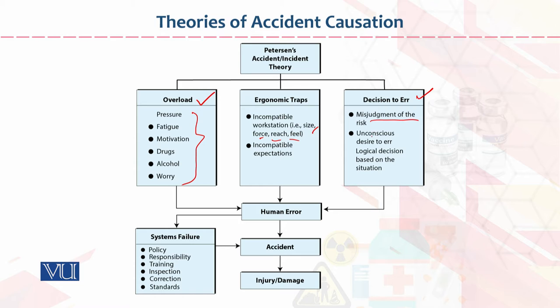Decision to err involves misjudgment of risk. Often your judgment is not accurate — this is called misjudgment — and due to misjudgment, the chances of an accident can also occur.